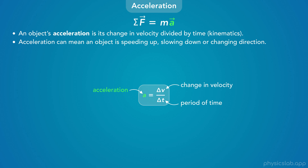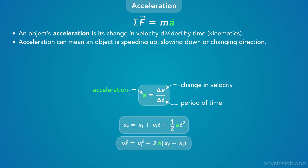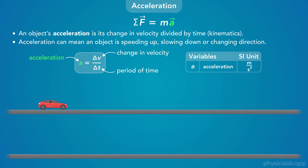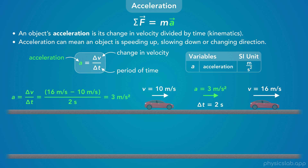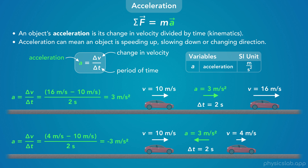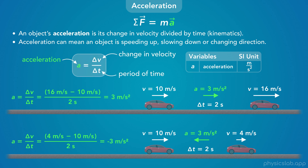The last part of the equation is acceleration. An object's acceleration is its change in velocity divided by time, which we covered in kinematics. The SI unit for acceleration is meters per second squared. It's important to remember that acceleration is a vector, so acceleration can mean an object is speeding up, slowing down, or changing direction. For example, the top car speeds up from 10 to 16 meters per second over 2 seconds, giving an acceleration of 3 m/s² to the right. The bottom car slows from 10 to 4 m/s over 2 seconds, so its acceleration is negative 3 m/s², or 3 m/s² to the left.